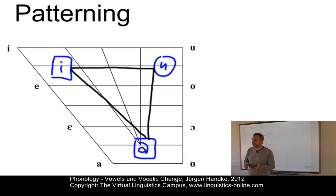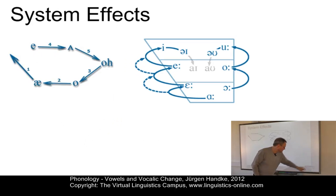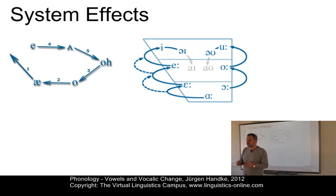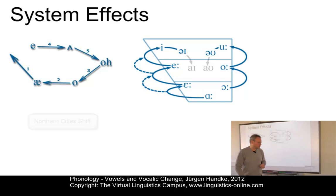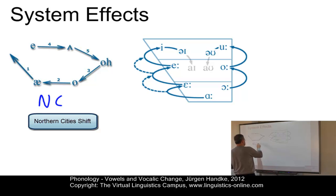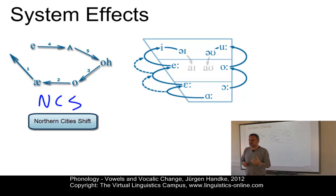In many languages, vocalic changes often affect the entire vowel system and not just individual vowels. In North American English, the status of the short O — as in 'cot' and 'dog' — and the short A — as in 'ash' and 'hat' — will influence the behavior of the rest of the vowel system. This system effect can be observed in the so-called Northern Cities Shift (NCS), which is a series of innovations in the vowels of English spoken in urban centers around the Great Lakes — for example, Detroit, Chicago, and so on.